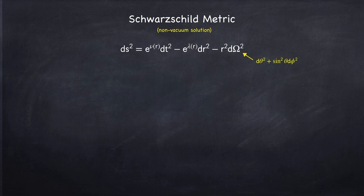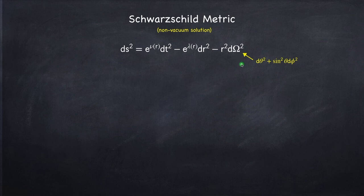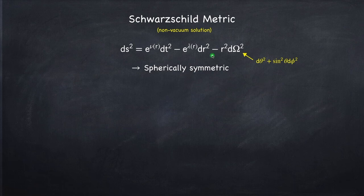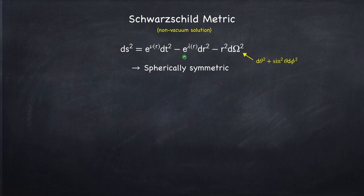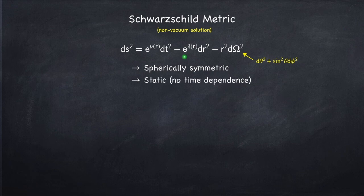ds squared is the spacetime interval — essentially the distance traveled in space and time — and it is invariant to all observers, so everyone will agree on this value. d omega squared is the standard spherical coordinate angular components, and we know it has this form because we've assumed spherical symmetry. That also means there are no cross terms involving dt d-theta, dt d-phi, or dr d-theta, dr d-phi, and the functions in the metric — e to the lambda and e to the nu — cannot depend on either theta or phi. Since we're in hydrostatic equilibrium, we're also assuming a static solution, so there can be no time dependence anywhere in the metric, and there is no cross term involving dt dr — only dt squared and dr squared. So our metric is diagonal.